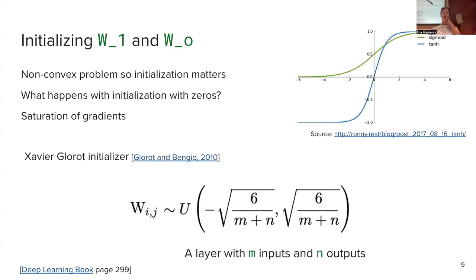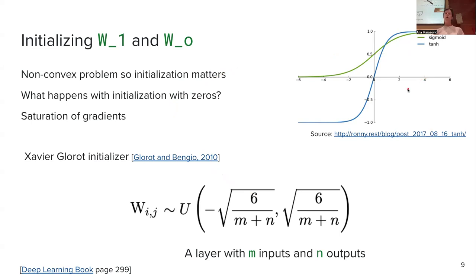We use the Xavier Glorot initializer, which samples uniformly from certain ranges. These ranges are determined by the size of your neural network — for example, in the first layer, the input size is determined by the feature vector size and the output size is determined by the dimensionality you set, which is again a hyperparameter. If we started with zeros, we would have the issue of gradient saturation: gradients would be zero and we would not make any optimization progress. So initialization matters, and the default initializer is often Xavier Glorot.